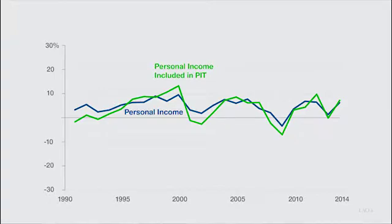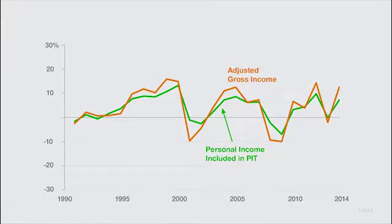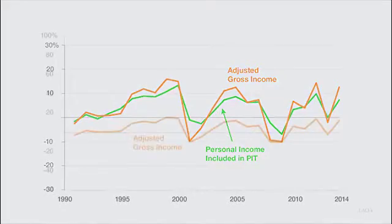The taxable parts of personal income still are not as volatile as the amount of income subject to the tax, which is called adjusted gross income. The reason is because the state taxes some things that are not included in personal income, such as capital gains.